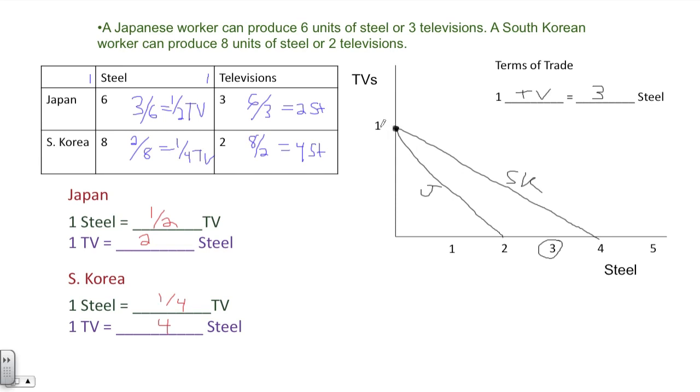In their own country, when they take one TV and sacrifice it to make steel, they can make two steel. So in the trade, they have to receive more than they could have received on their own in their own country. Therefore, they must receive more than two.